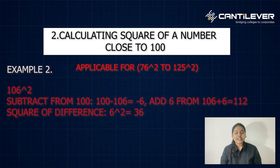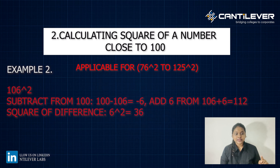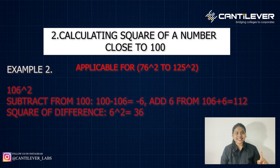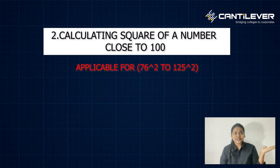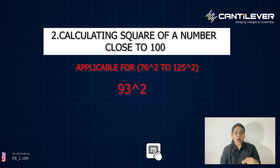Let's look at another example: 106². 100 minus 106 gives you minus 6. Now add that 6 to 106 since it is a negative integer, so 106 plus 6 gives you 112. The square of the difference, 6² equals 36. The answer would be 11236. Kindly do it for 93² and write your answers in the comment section below.